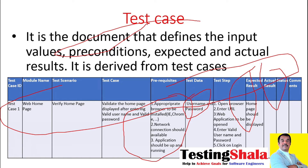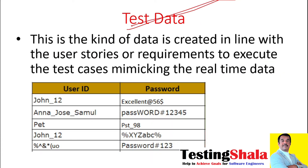All this information in the test cases is normally derived from test scenarios, user stories, and clarifications from various stakeholders. Test data is also another test deliverable we create, in line with the user stories or requirements, in order to execute the given test cases. For example, user IDs and passwords — we can have different sets of test data created as part of the test data creation process, mimicking real-time data as per the given requirement.